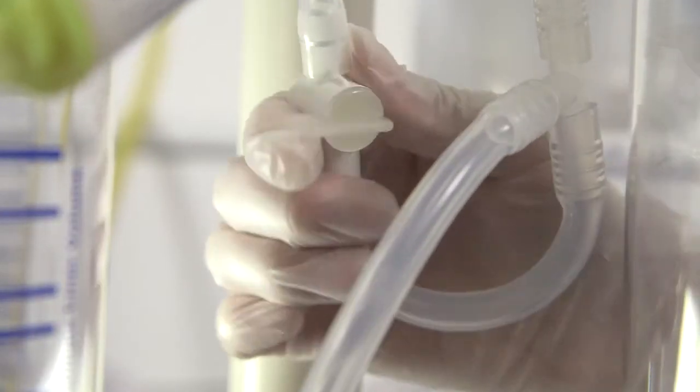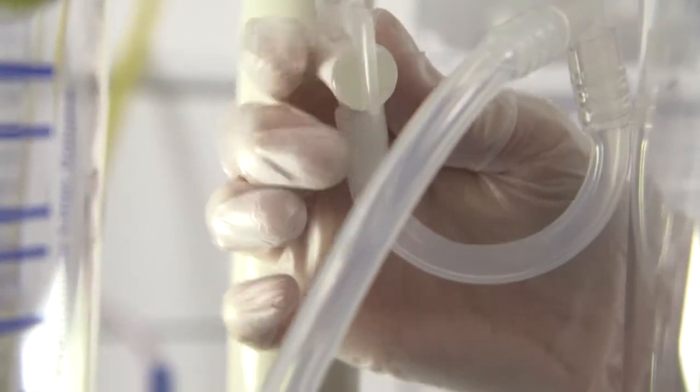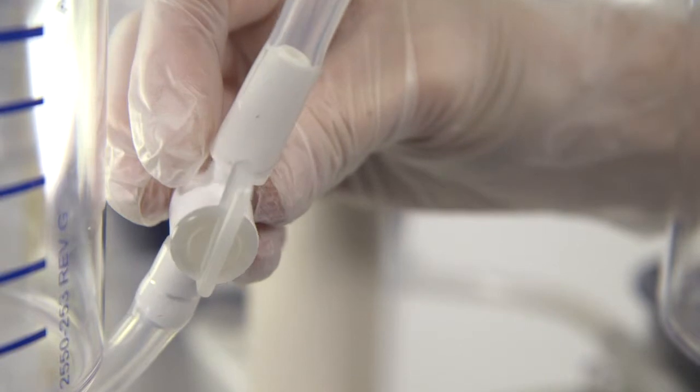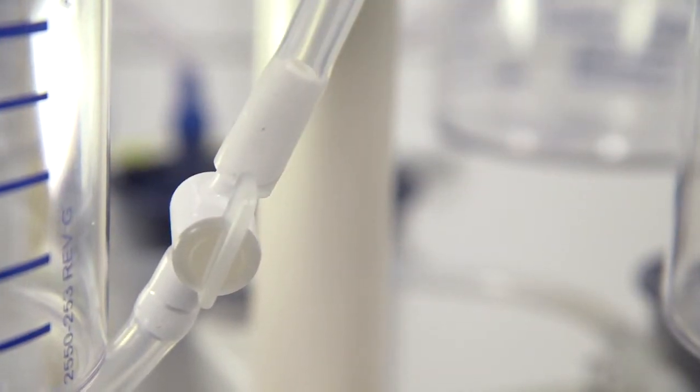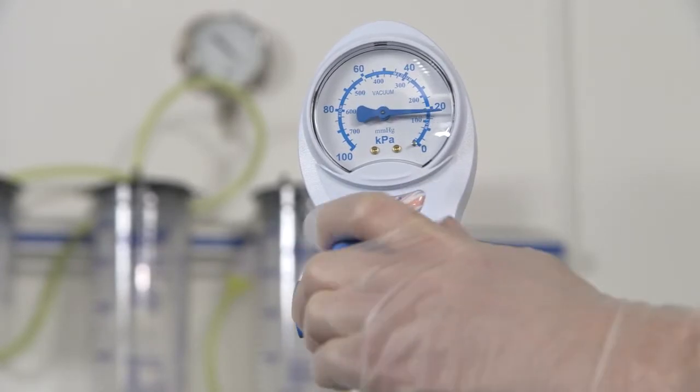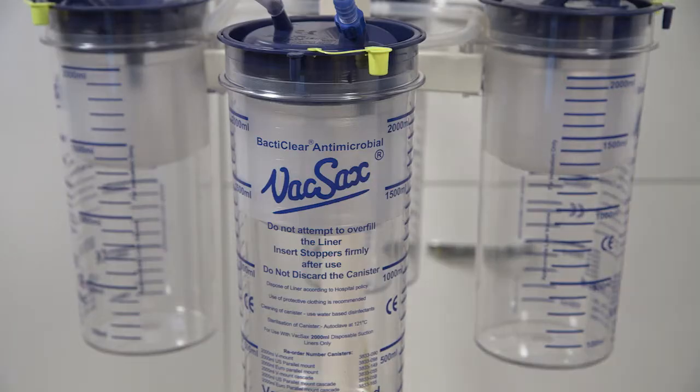Open both siphon taps on the tubing kit. Switch on the vacuum and set to high. Wait until all the liners have expanded into the canisters.